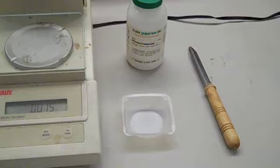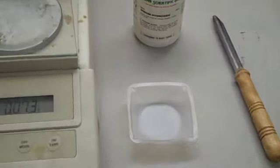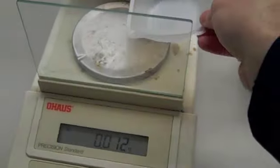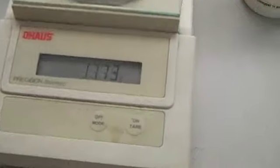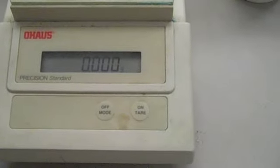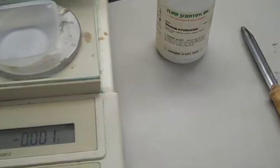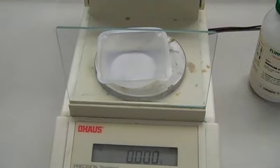When massing out your sodium hydroxide, you'll take your weigh boat, set it onto the scale, and then hit the tare button to zero it out. Once it's zeroed, then you can add the amount of sodium hydroxide that you calculated you would need.